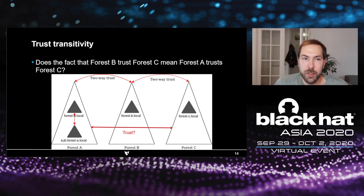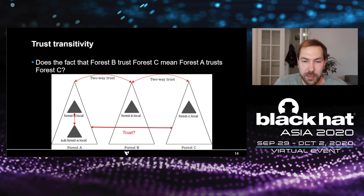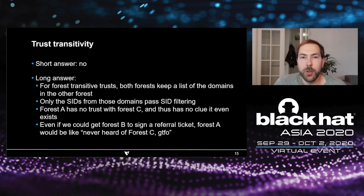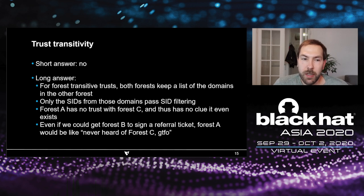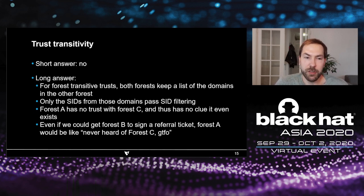To start us off, we need to look at trust transitivity. Some people wonder: if forest A and forest B trust each other, and forest B and forest C trust each other, does that mean forest A implicitly trusts forest C? The short answer is no. For forest transitive trusts, both forests keep a list of domains and security identifiers present in the other forest, and only SIDs on that specific list will pass SID filtering. Forest A doesn't have any trust with forest C and doesn't even know it exists. So if a ticket arrives from forest C, it would contain SIDs that forest A doesn't know about, and it would completely drop the ticket.